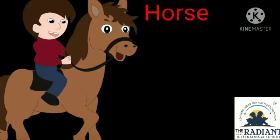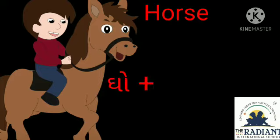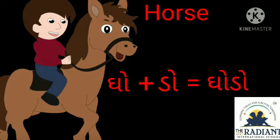Students, यहाँ पे आपको स्क्रीन पे पिक्चर दिख रहा है। क्या है वो? Horse. Horse को गुजराती में बोलते हैं गोडो। तो गोडो शब्द लिखने के लिए हम letters यूज़ करेंगे — ग को ओ की मात्रा, प्लस ड को ओ की मात्रा। गोडो।